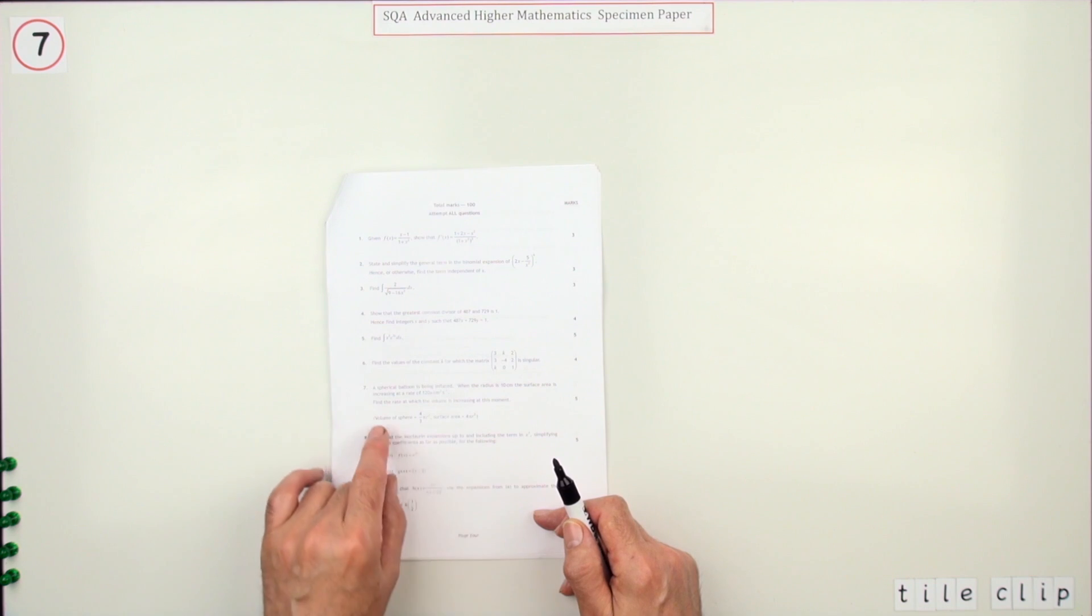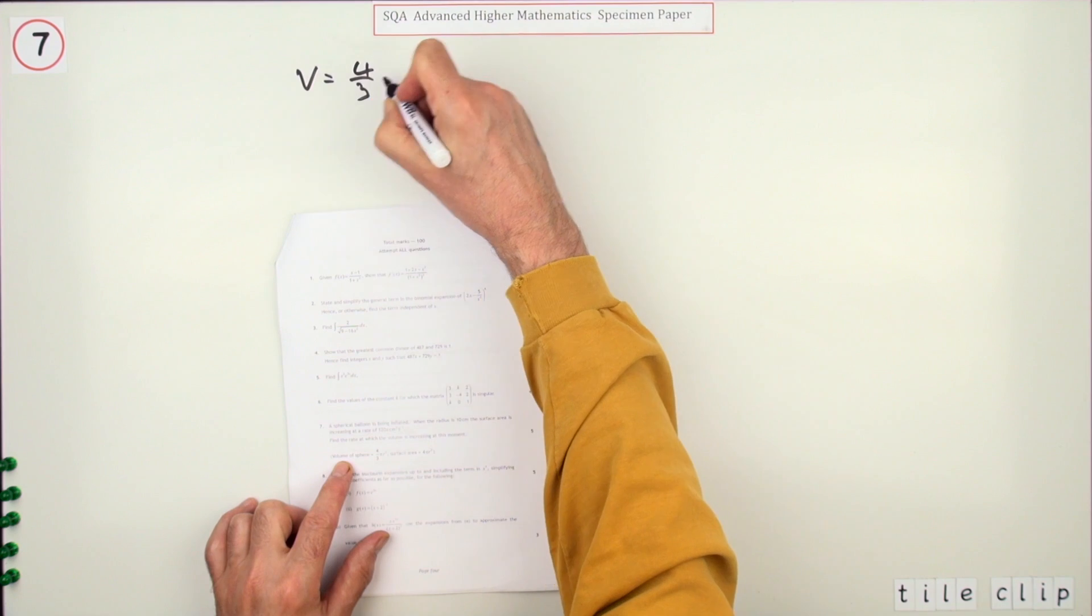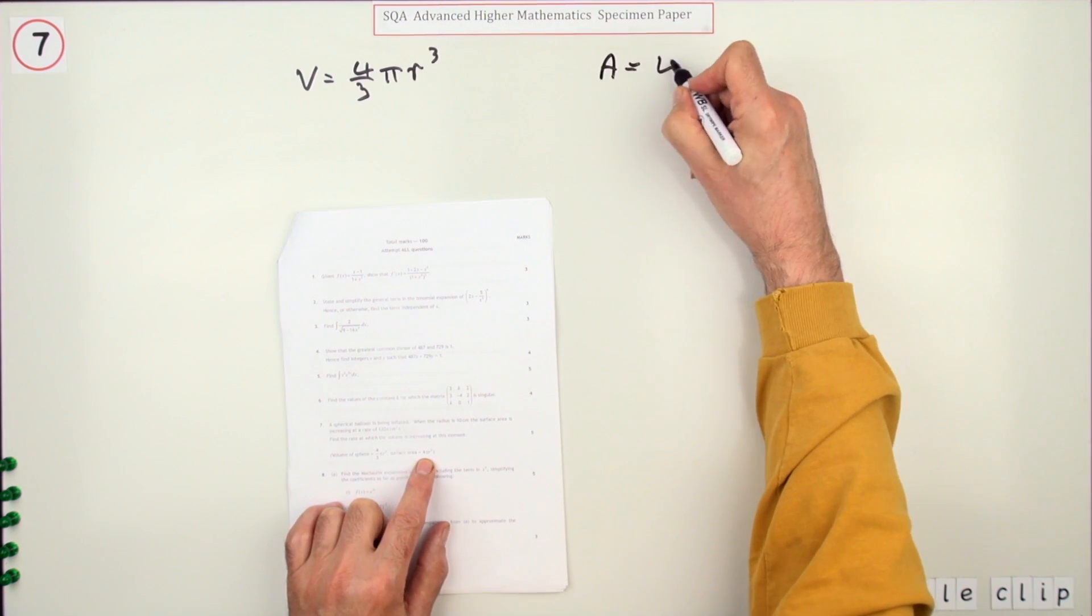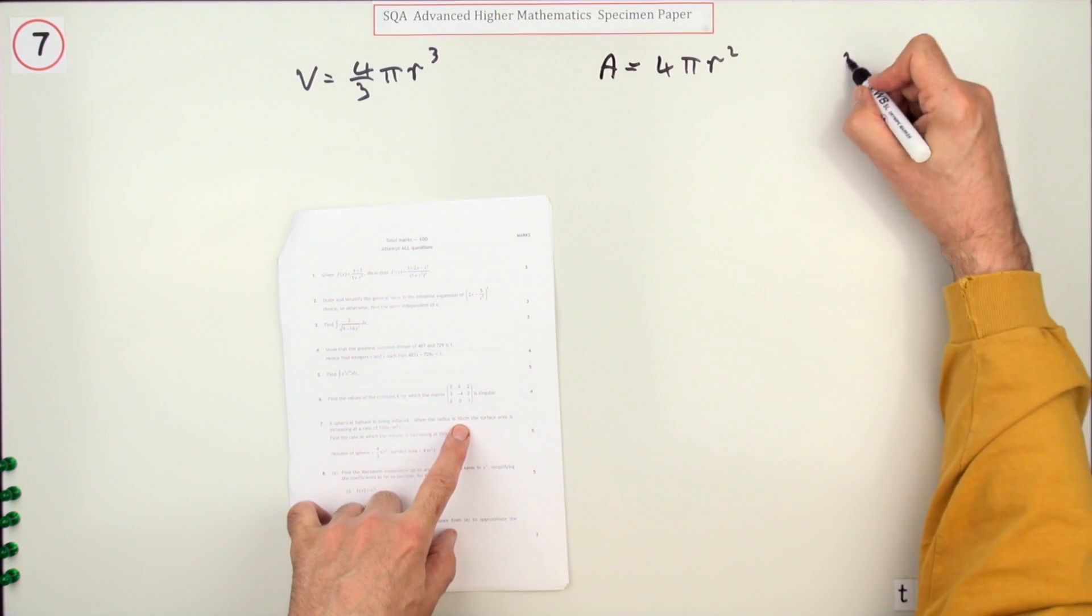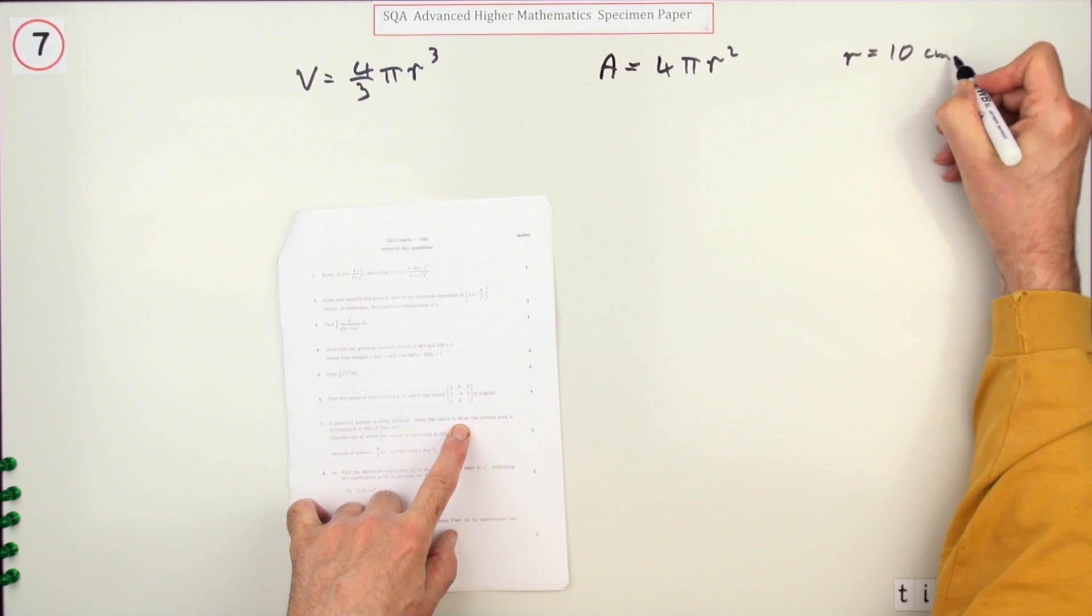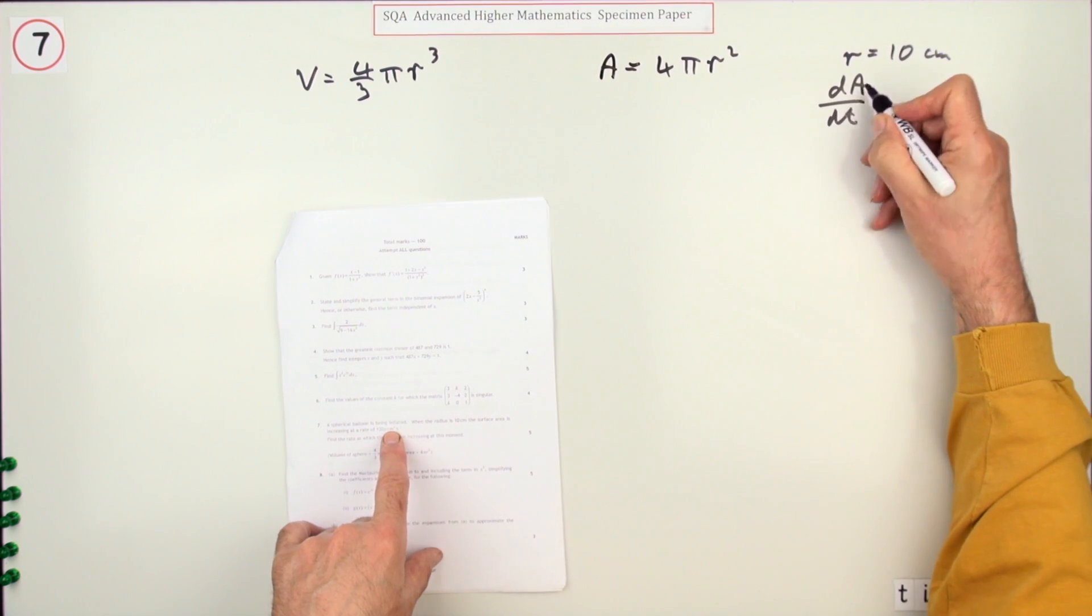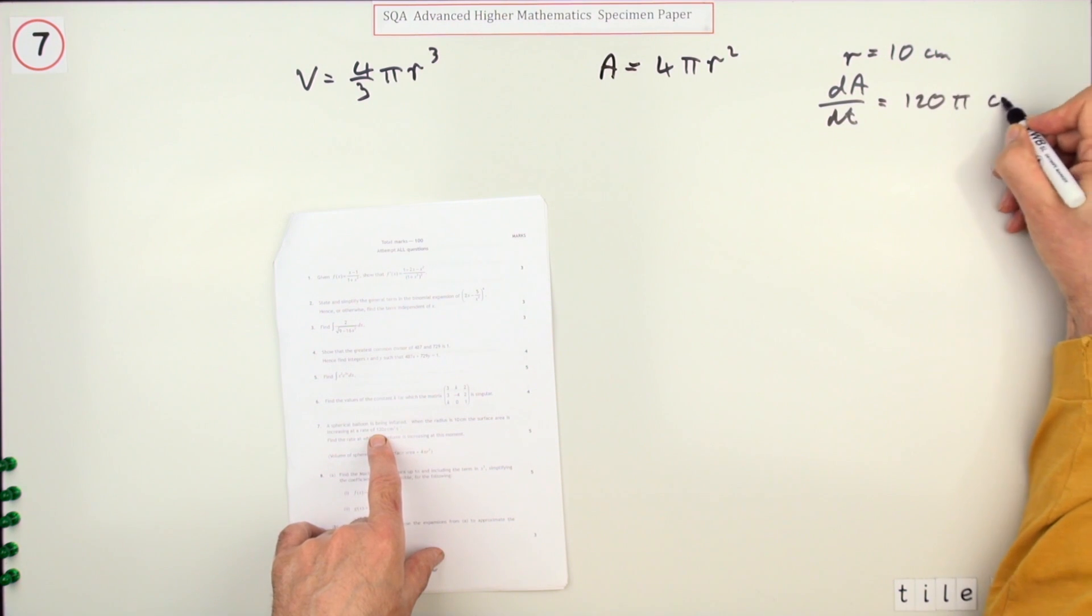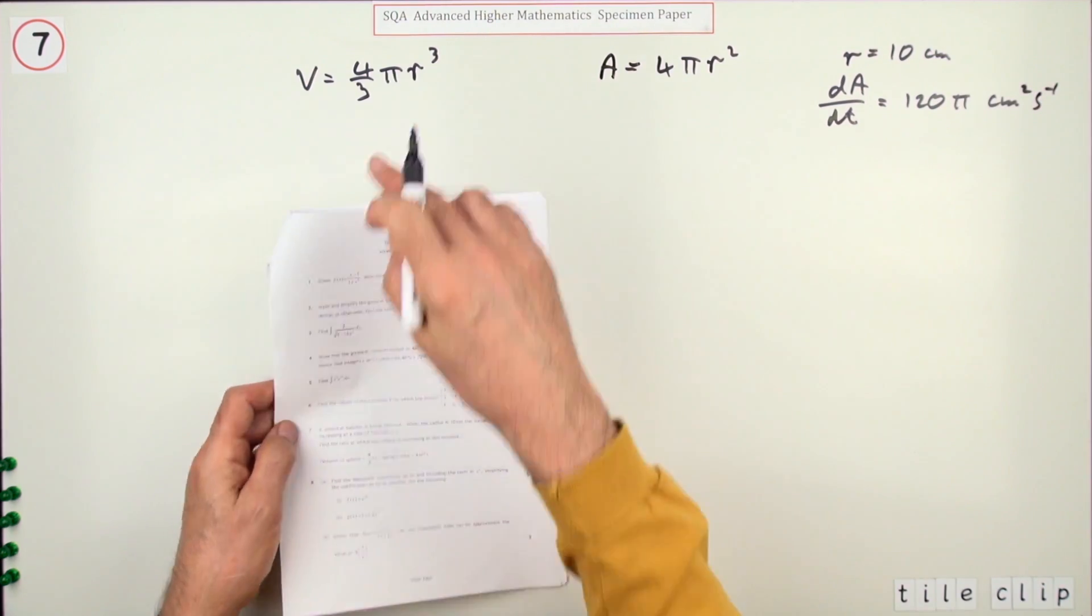That's dV/dt. The volume of a sphere is 4/3 πr³ and the surface area is 4πr². The radius is 10 centimeters and the area is increasing at a rate of dA/dt = 120π cm² per second.